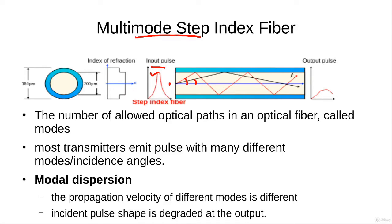We can see that the path of the red ray is longer than the path of the black ray, and the path of the black ray is longer than the path of the blue ray. As a result, these rays arrive at different times at the receiver. First, the blue ray arrives, then the black ray, and then the red ray.